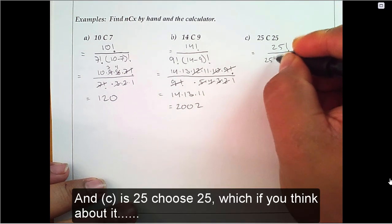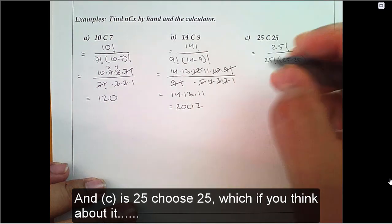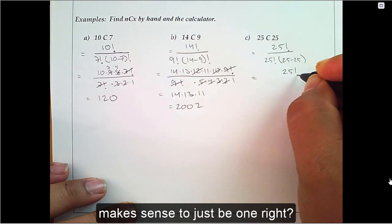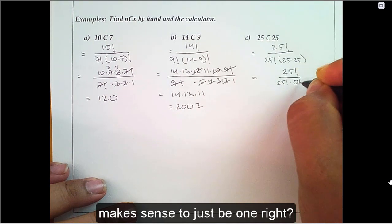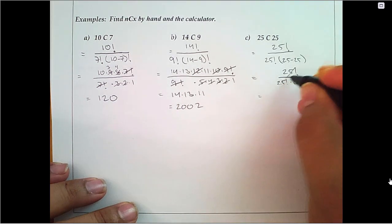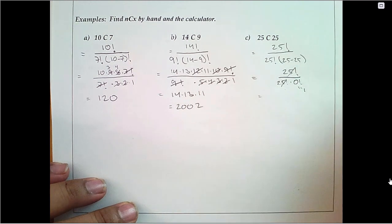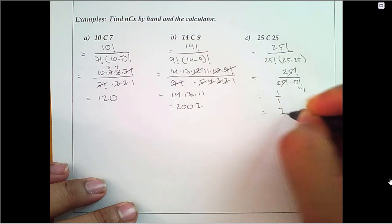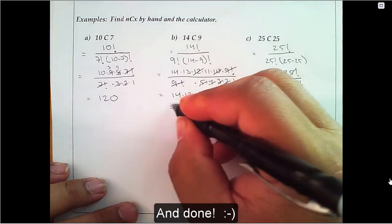And C is 25 choose 25, which if you think about it, makes sense to be 1, right? And done.